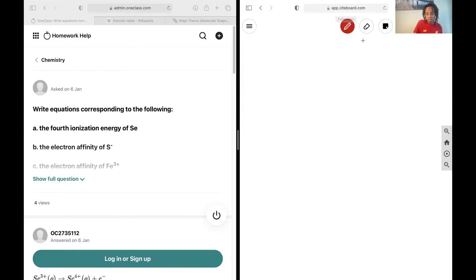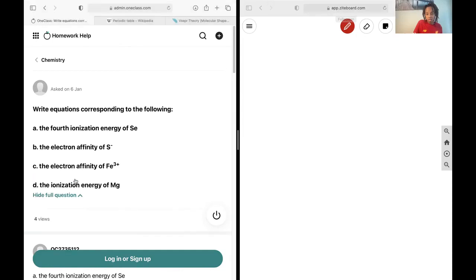Okay, we want to write down equations corresponding to the following, so I need to understand the words that they're using. The ionization energy, which is typically just written IE, is defined as the minimum energy to remove an electron, to remove the outermost electron.